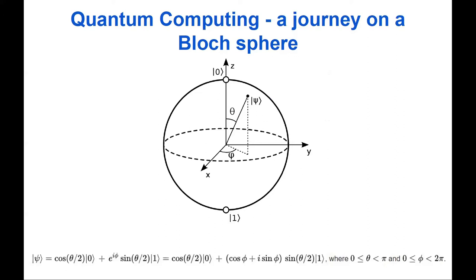Quantum gates change one quantum state to another — they change one point on this sphere to another. So in the case of a single qubit, we travel on this sphere. That is how computations are run, basically.